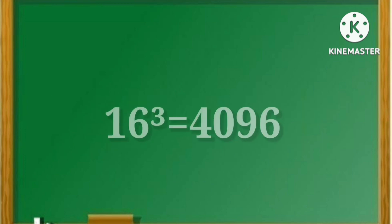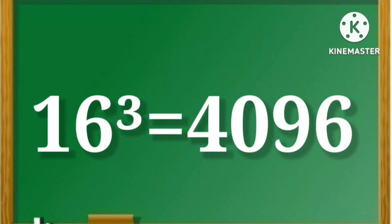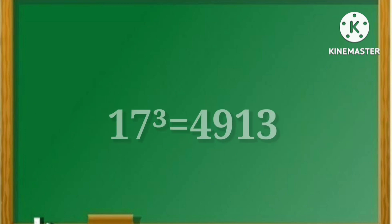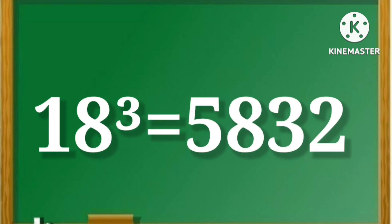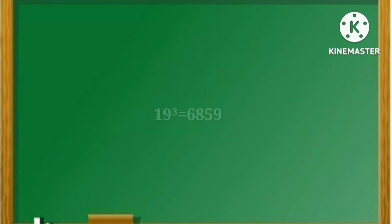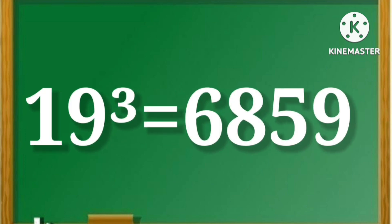16 cube is equal to 4096. 17 cube is equal to 4930. 18 cube is equal to 5832. 19 cube is equal to 6859.